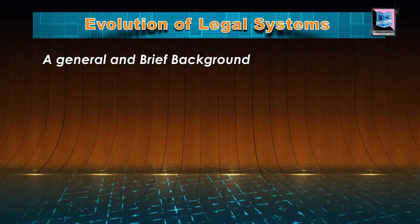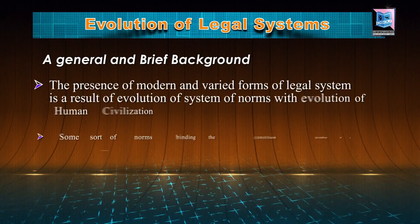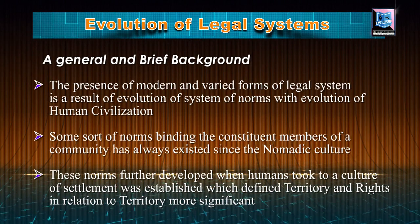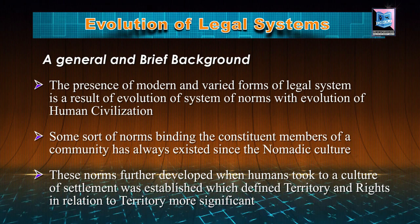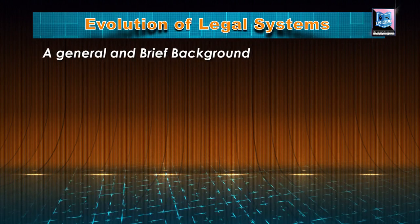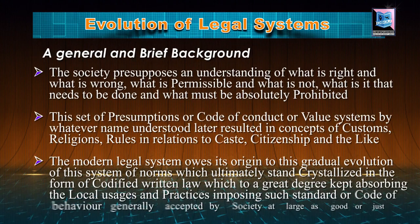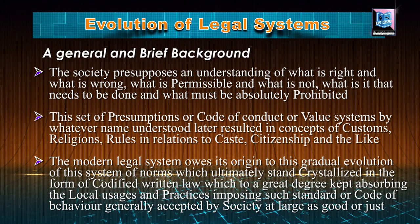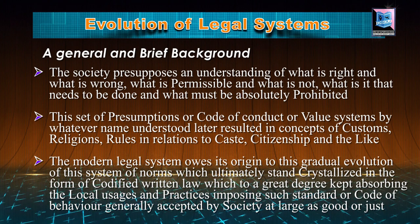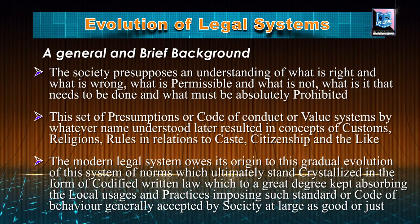These norms further developed when humans took to agriculture and a culture of settlement was established, which had a defined territory and rights in relation to territory, which were more significant for them at that time. The society presupposes an understanding of what is right and what is wrong, what is permissible and what is not, what needs to be done and what must be absolutely prohibited.